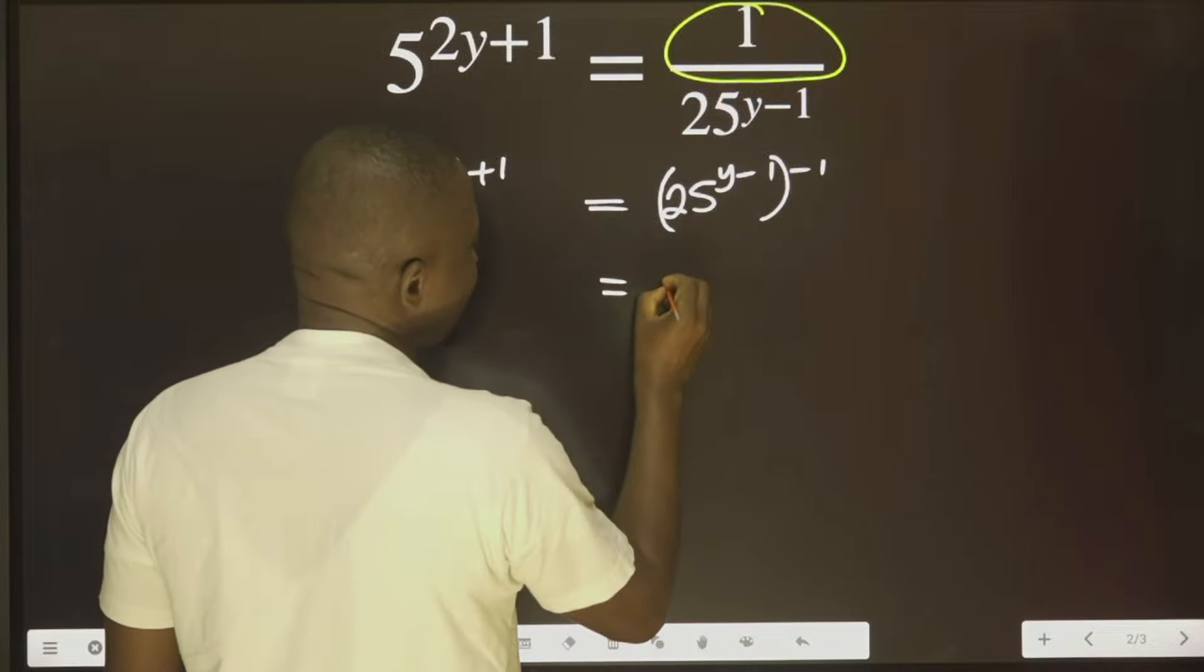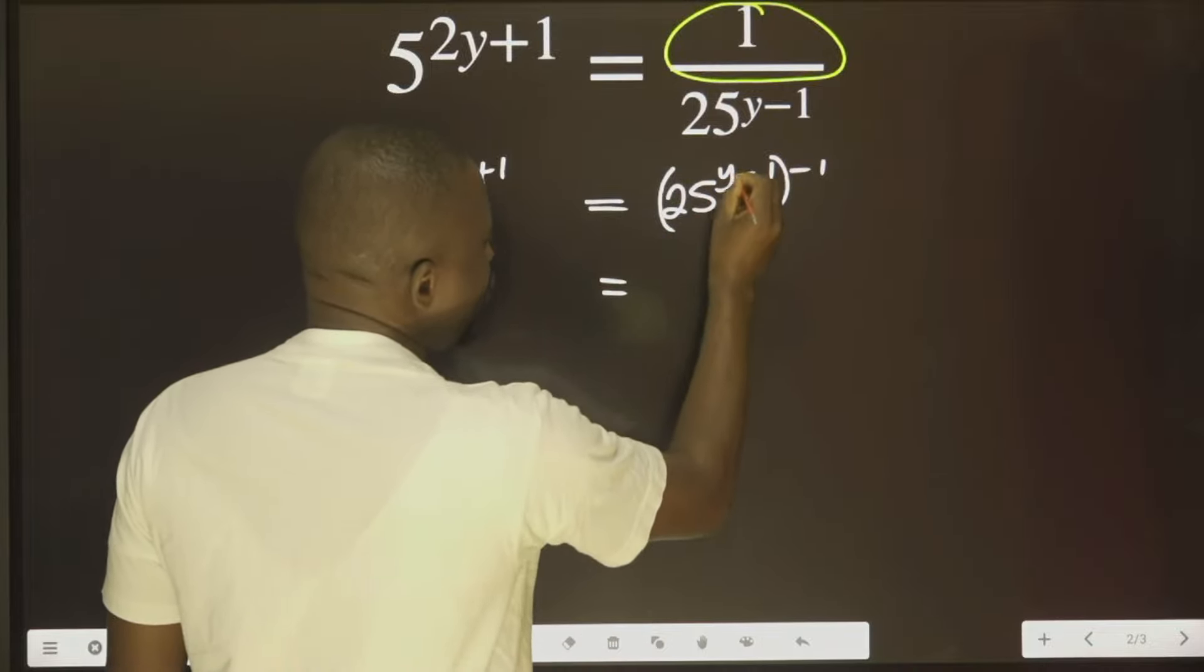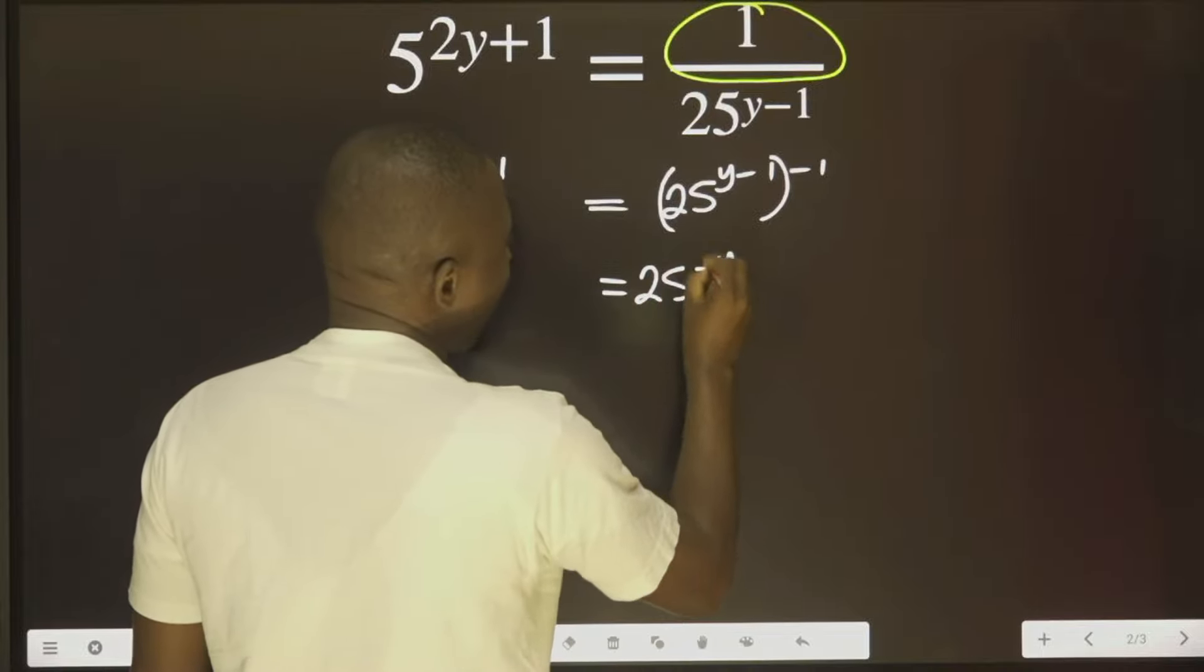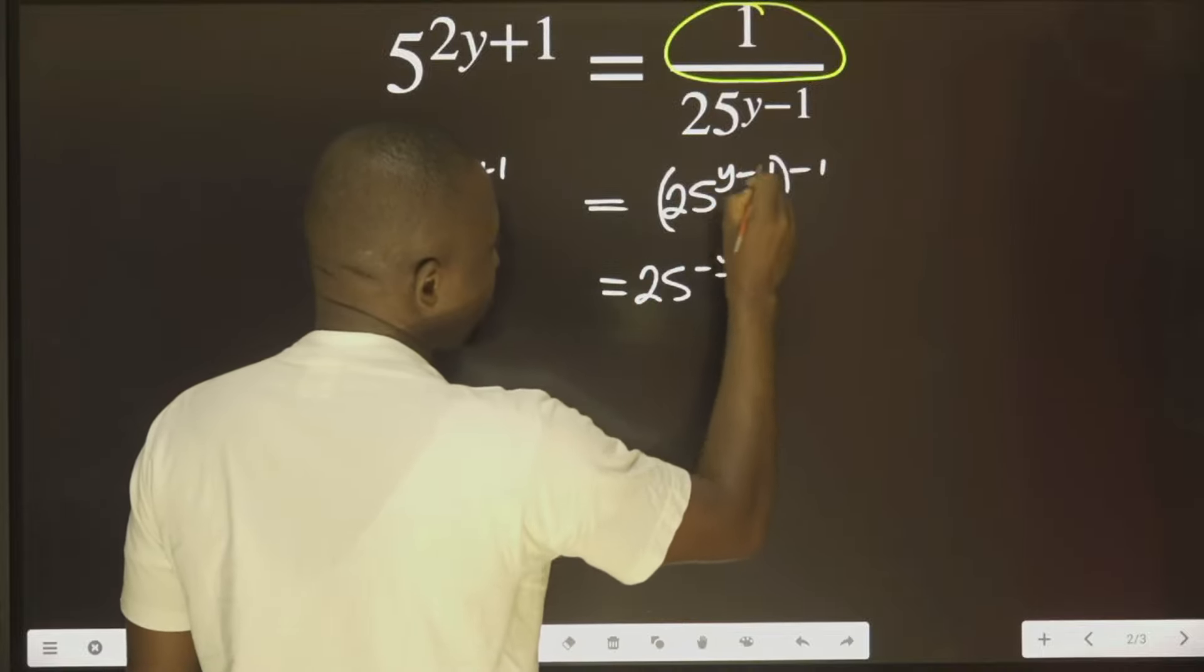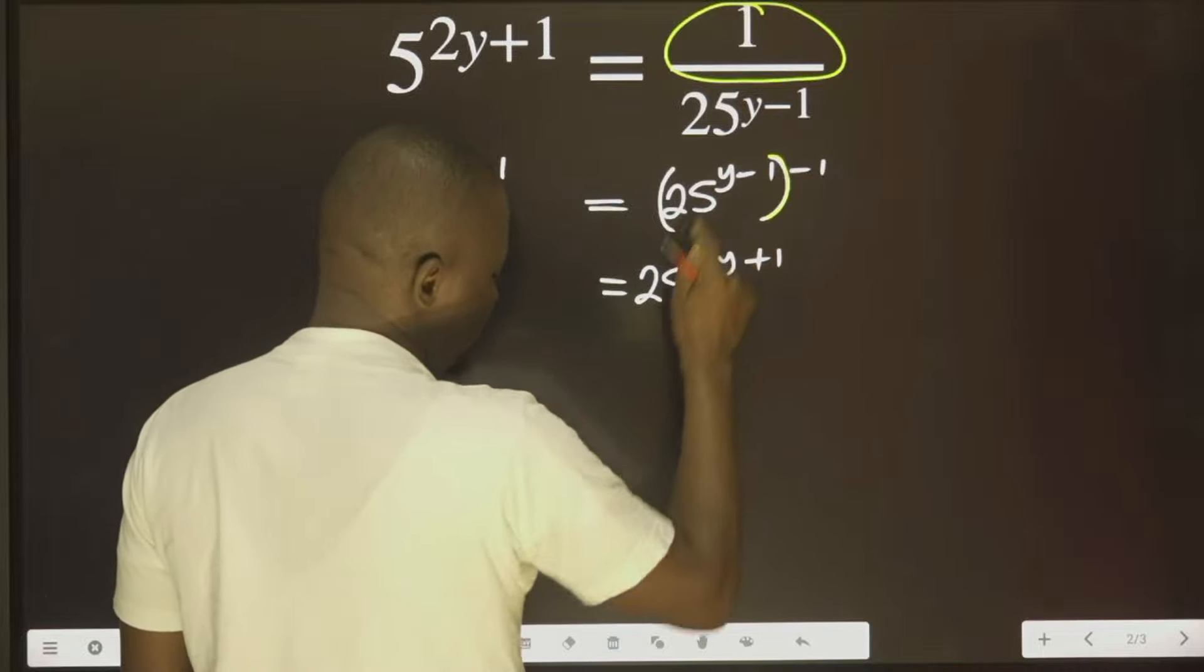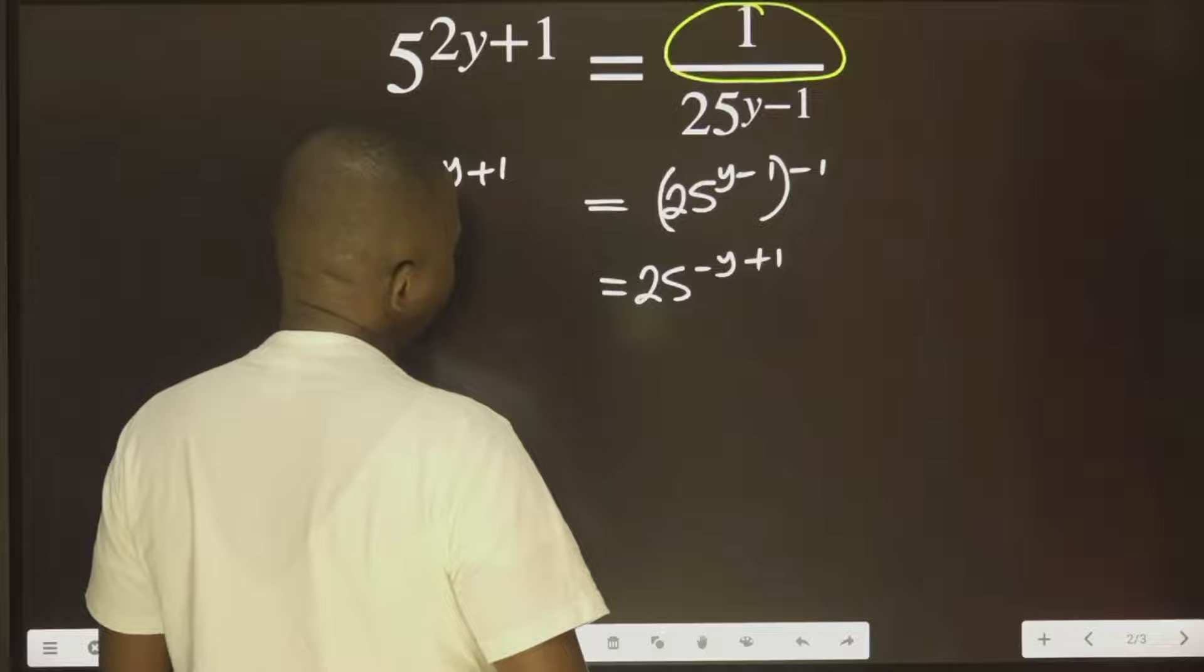I can express this further: y multiplied by 1 is minus y, and minus 1 multiplied by minus 1 is plus 1. Remember that this is multiplication.